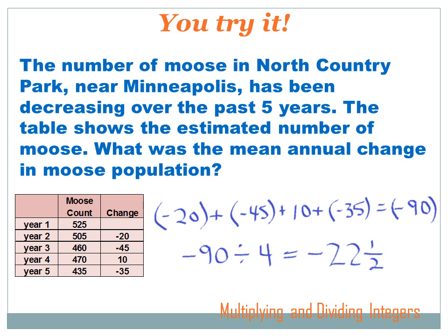Well the changes of moose population were -20 between the first year and the second year, and then they lost 45 moose, and then they gained 10 moose, and then they lost 35 more moose. So we have to add those up: -20 plus -45 plus 10 plus -35, and that totals up to -90. Now we've got -90 divided by the number of units that we added up—one, two, three, four. So -90 divided by 4 is -22 and a half.